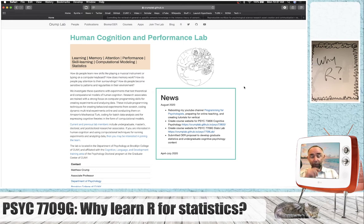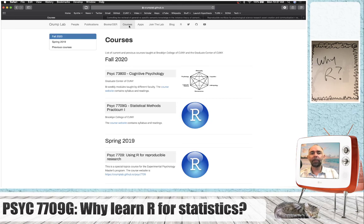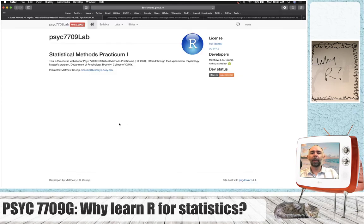So I thought I would just go to my lab website and point out that this entire website was made with RStudio, just like the course website. So if you went to the courses tab and looked up PSYC 7709G, I made the course website using RStudio as well. Actually almost all of the resources I'll be making for this course I've made with R and RStudio.